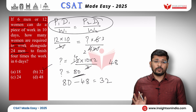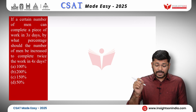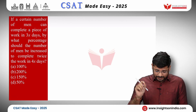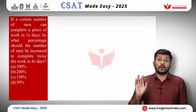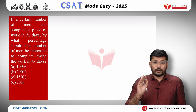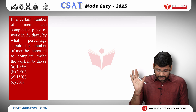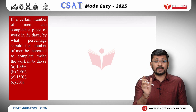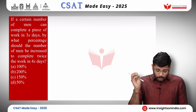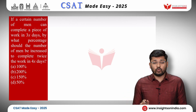Now you have understood this formula and concept fully. We will go to the next question. If a certain number of men can complete a piece of work in 3x days, by what percentage should the number of men be increased to complete twice the work in 4x days? They are not telling us how many men there are, just that the duration is 3x days.